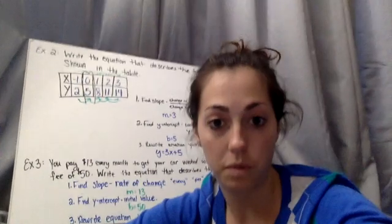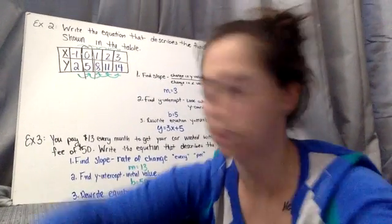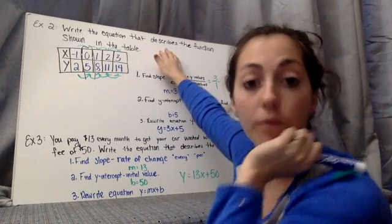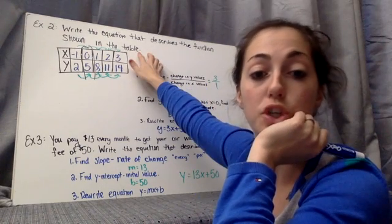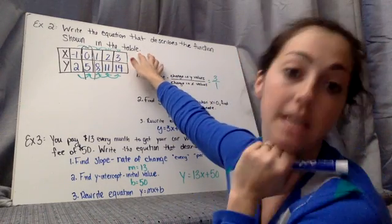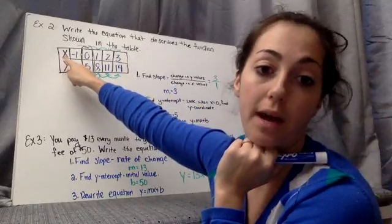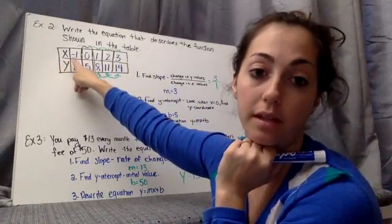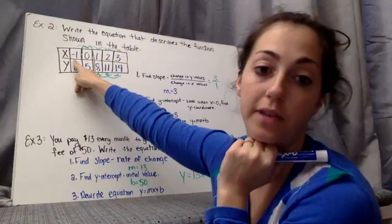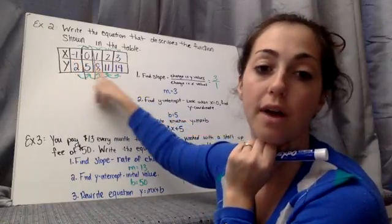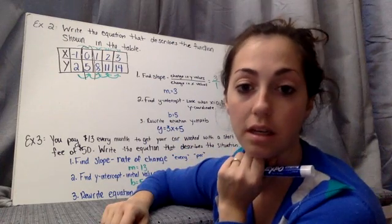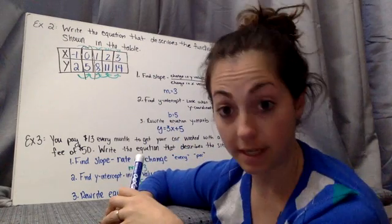The next thing to do. Example two says write the equation that describes the function shown in the table. So you've got to get this table down. We have our x and y table with five values. We have for the x values negative 1, 0, 1, 2, 3. And for the y values 2, 5, 8, 11, 14. So get that table down.